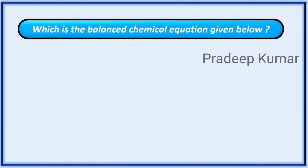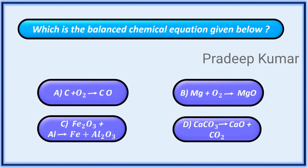Which is the balanced chemical equation given below? Options: A. Carbon plus oxygen gives rise to cobalt. B. Magnesium plus oxygen gives rise to magnesium oxide. C. Iron oxide plus aluminium gives rise to iron plus aluminium oxide. D. Calcium carbonate gives rise to calcium oxide plus carbon dioxide.